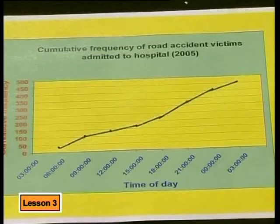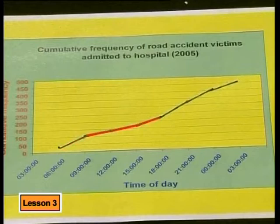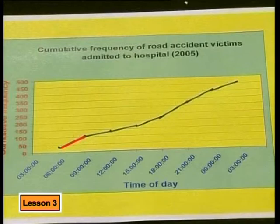We will call the graph cumulative frequency of road accident victims admitted to hospital in 2005. What do you notice about the shape of the graph? It has a steep slope initially but then a flatter slope. Then it increases rapidly between two points again but flattens slightly after midnight. This is quite often expected with cumulative frequency graphs — a steep increase followed by a flatter increase and then a steep increase again. The slope of the graph tells us about how much increase there is between points.